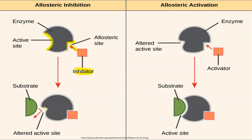The binding of the inhibitor brings a conformational change in the active site, so the active site changes its shape. Thereby the substrate cannot bind to the active site. The substrate molecule cannot bind because the inhibitor molecule has caused an altered active site conformation.